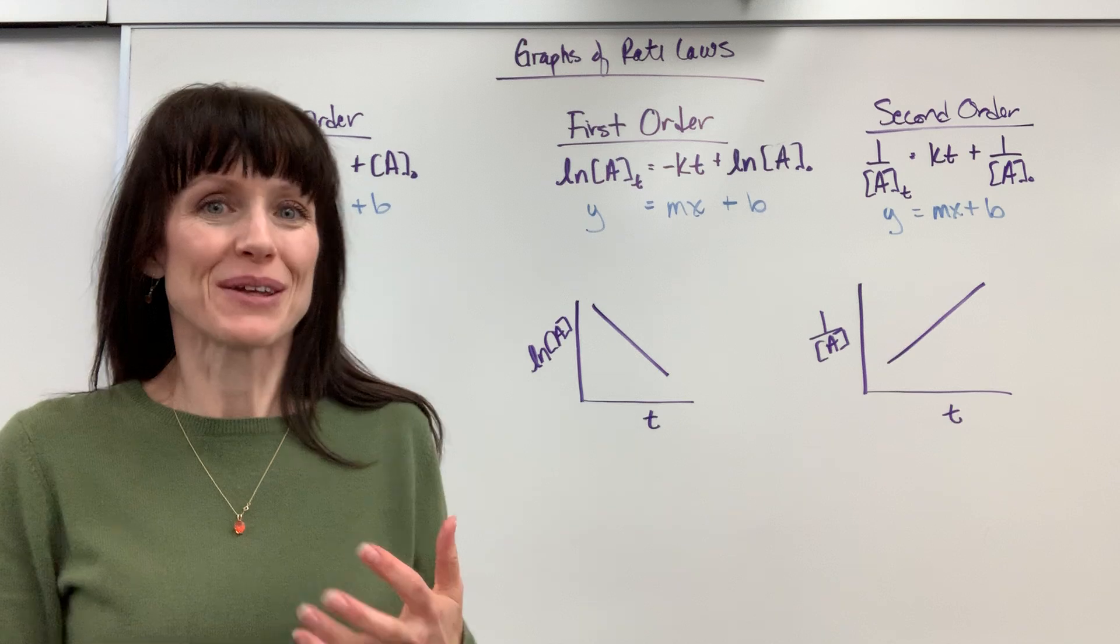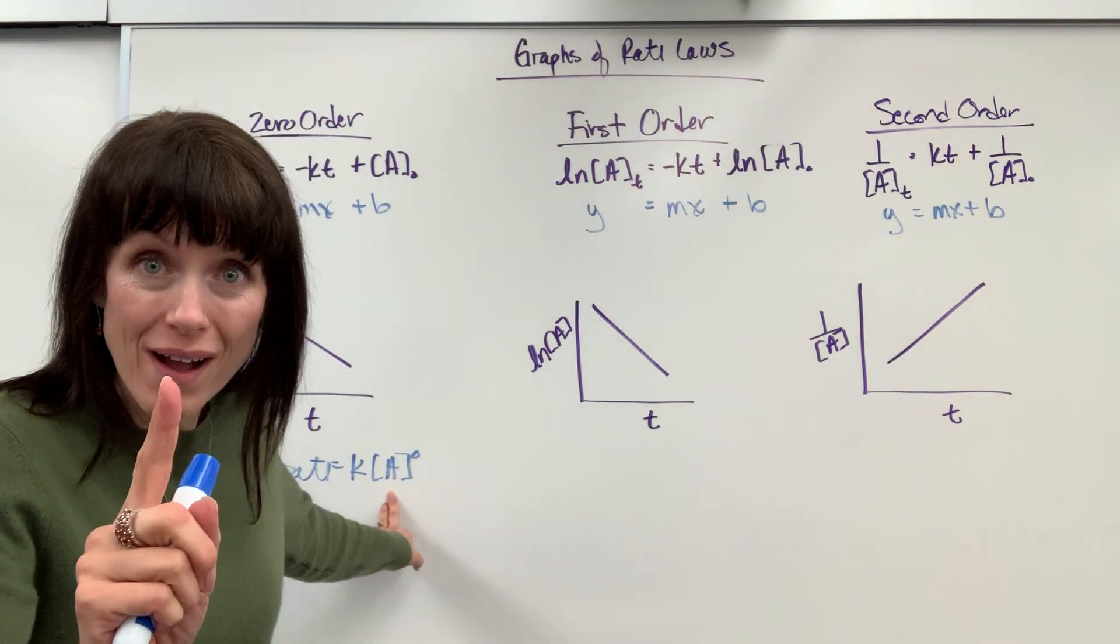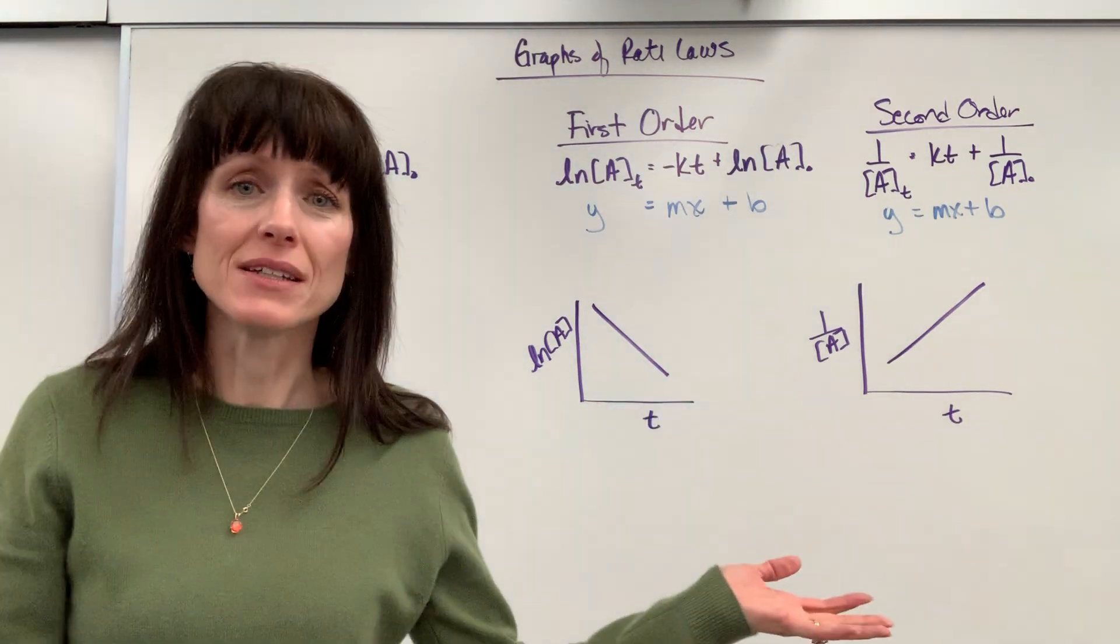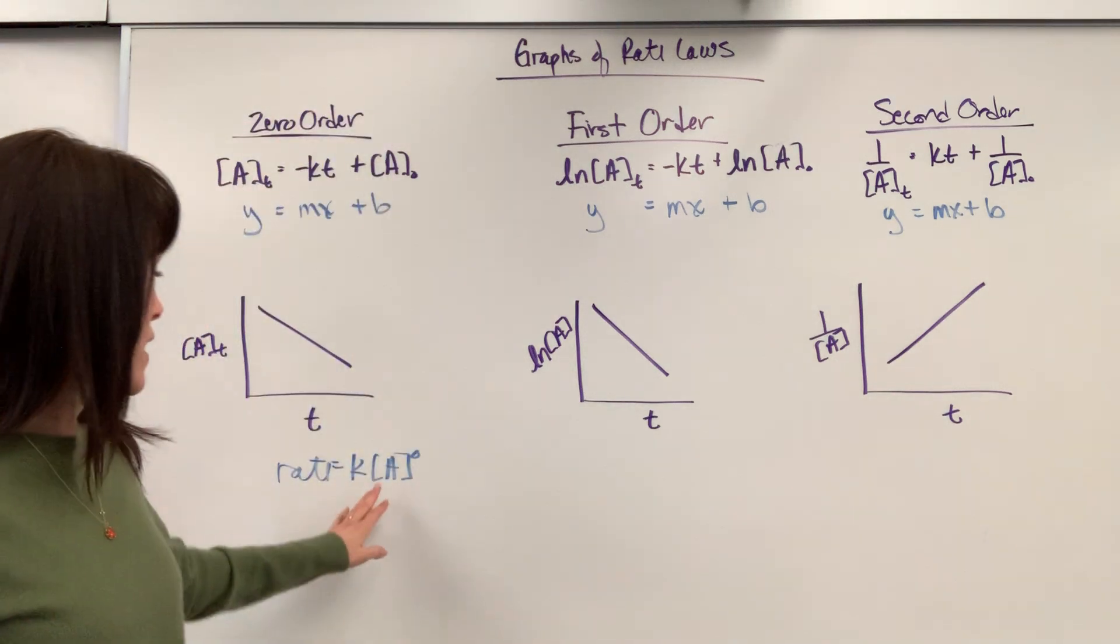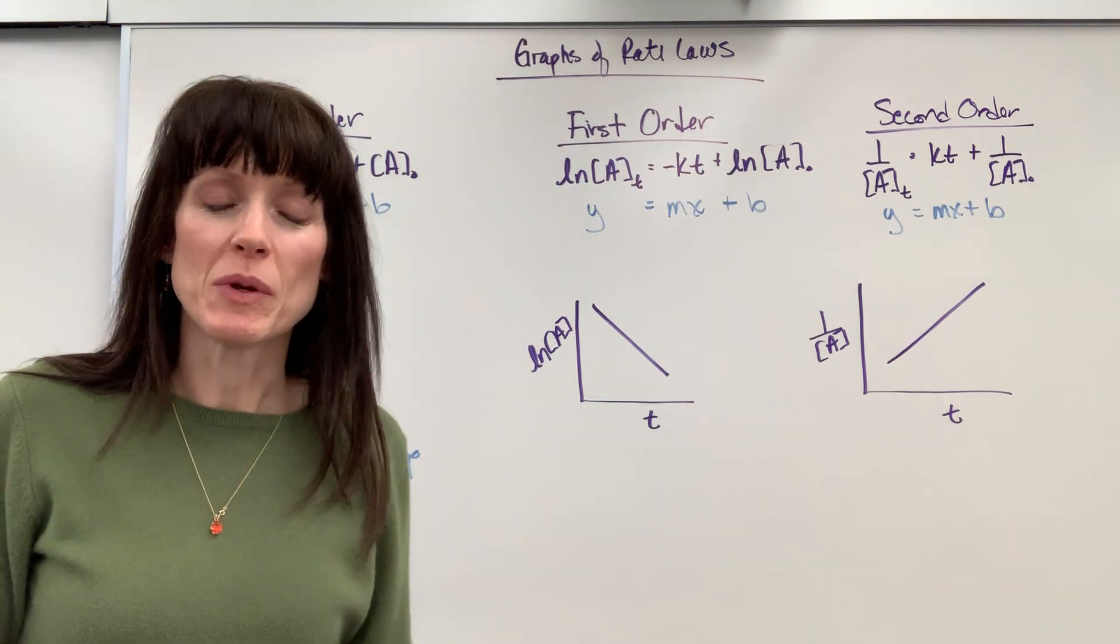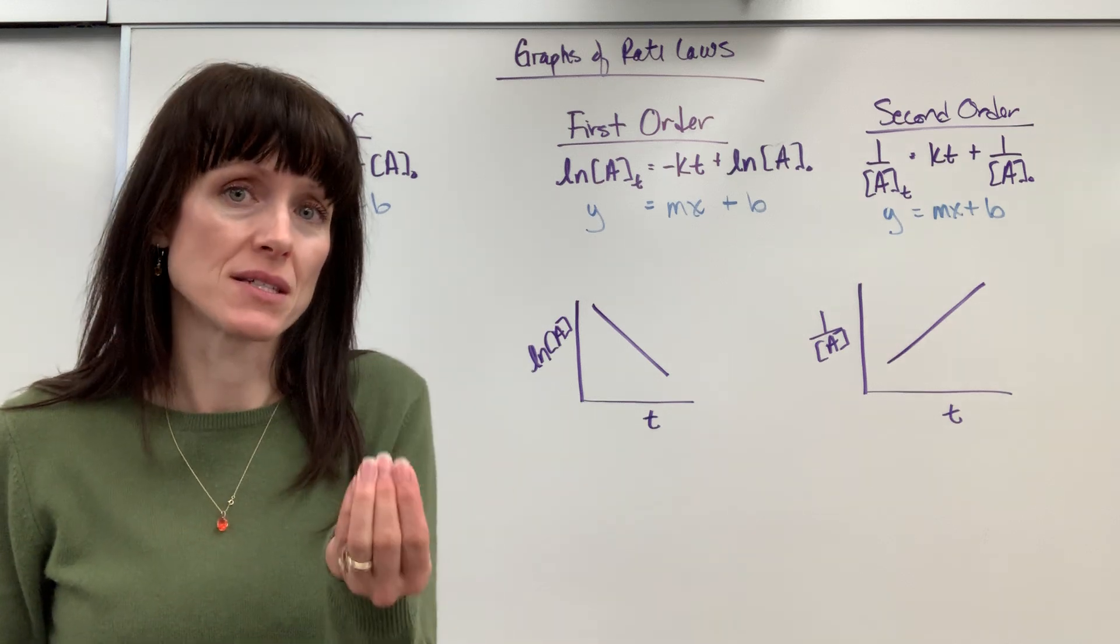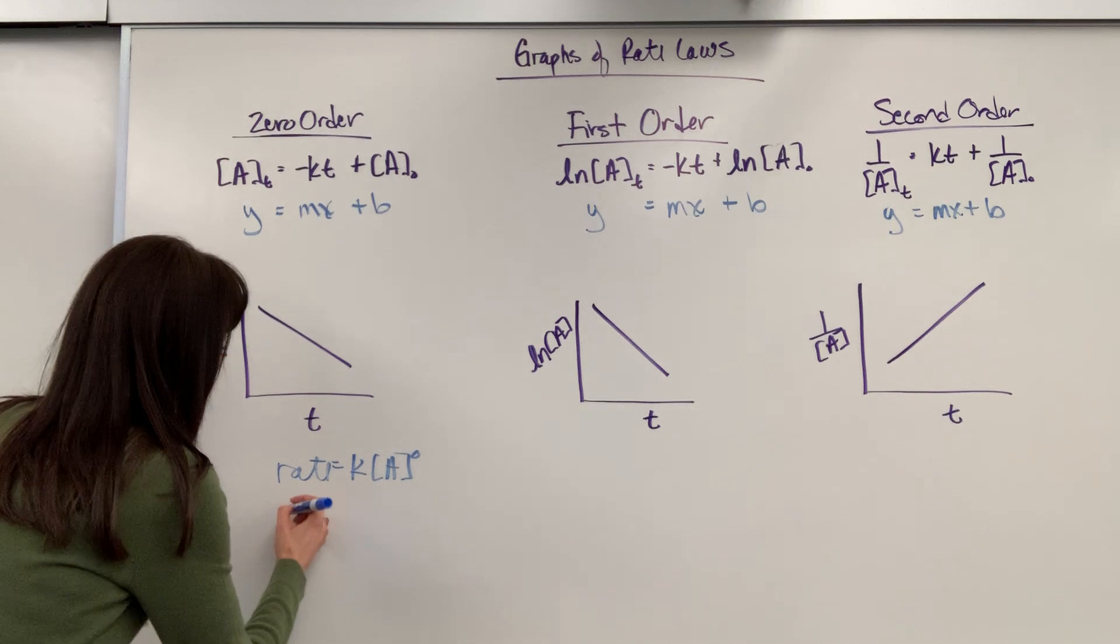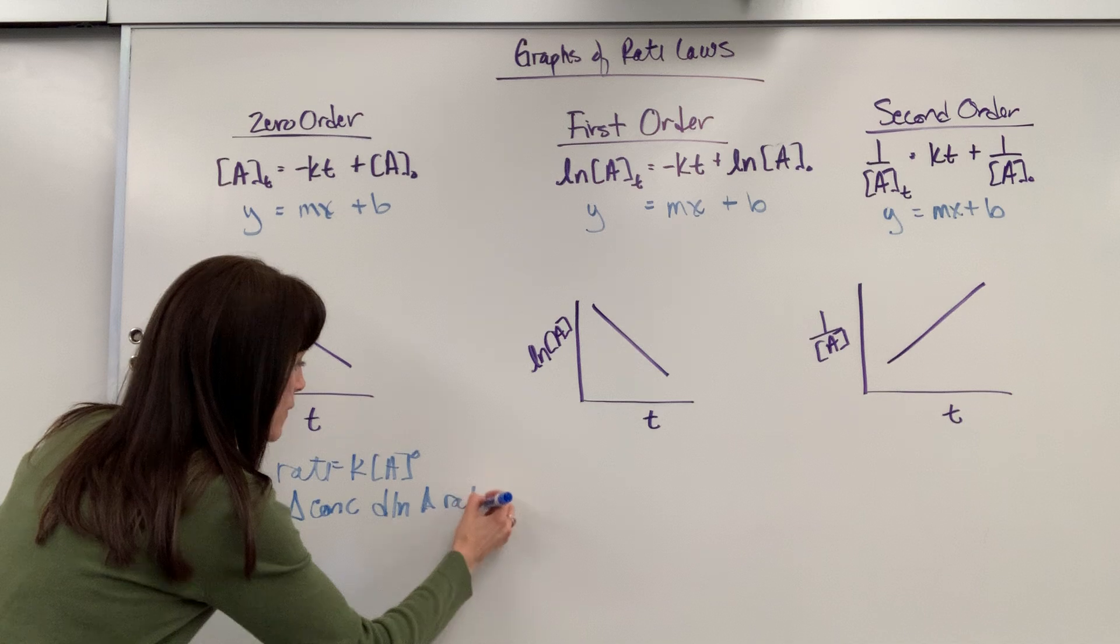What's really interesting about a zero-order, look at this: anything to the power of zero is one. That means you can change that concentration all you want - increase it to a million, decrease it to one times ten to the minus five concentration. Doesn't matter. You take that to the order of zero, it will always be one. Which means in a zero-order, you can change the concentration and the rate doesn't change. A zero-order means that a change in concentration does not change the rate.